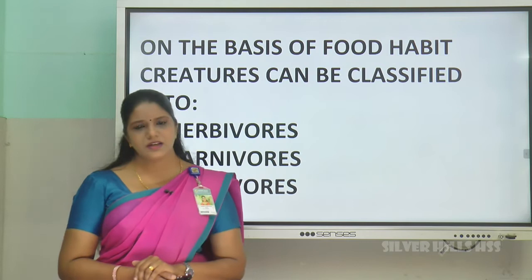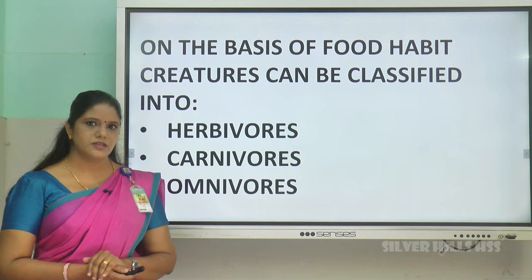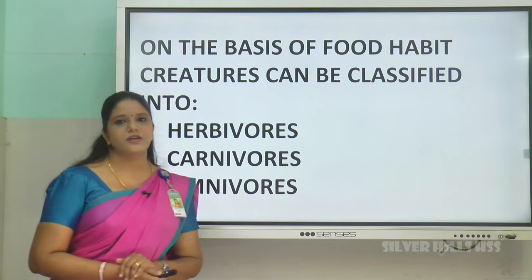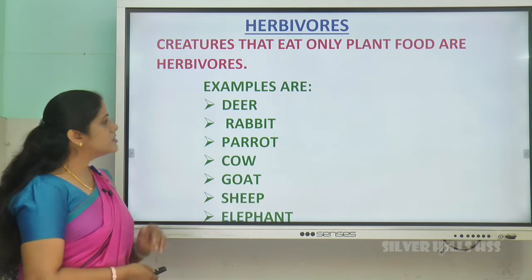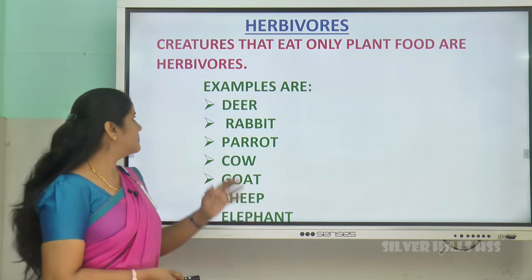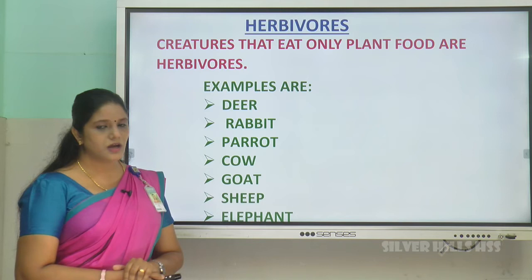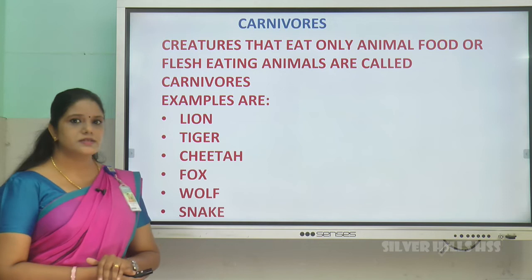Are you vegetarian or non-vegetarian? Some people eat vegetarian food and some are non-vegetarian. Like that, on the basis of food habits, creatures are classified into herbivorous, carnivorous, and omnivorous. Creatures that eat only plant food are called herbivorous. Examples: deer, rabbit, parrot, cow, sheep, etc. are herbivorous.